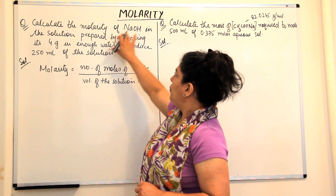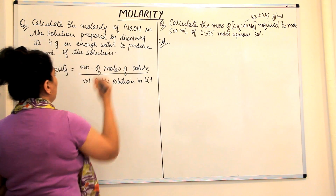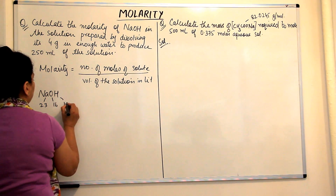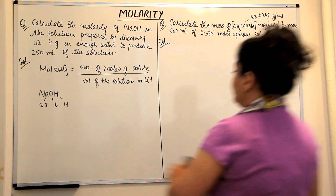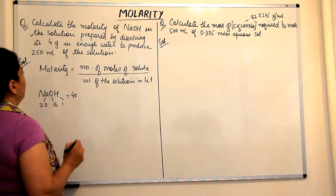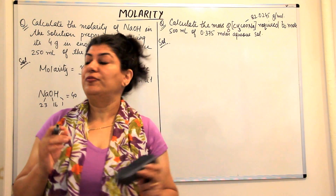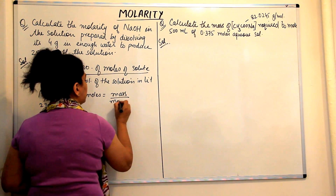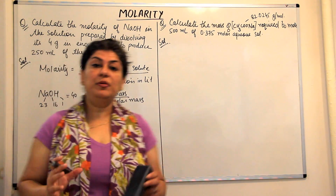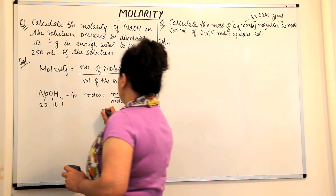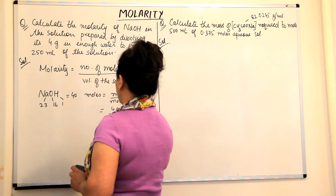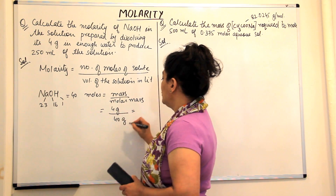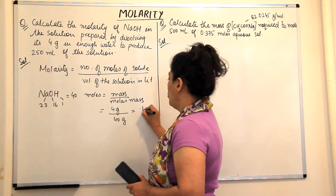Number of moles of solute — we need to calculate the molar mass of sodium hydroxide. Sodium is 23, oxygen is 16, hydrogen is 1, so the molar mass of sodium hydroxide is 40 grams per mole. To calculate the number of moles: moles = mass given ÷ molar mass = 4 grams ÷ 40 grams = 0.1 moles.